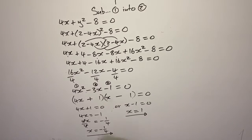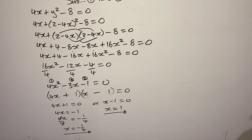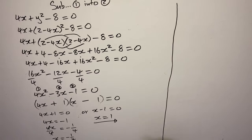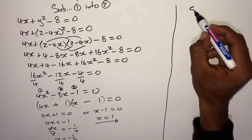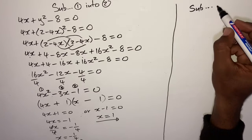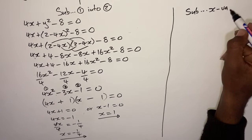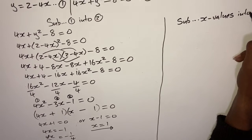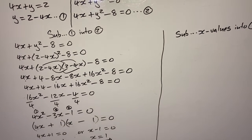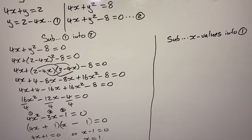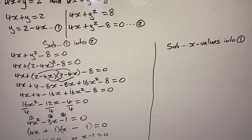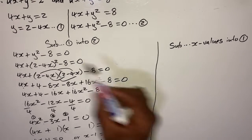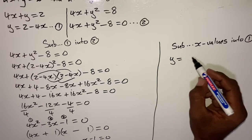I conclude: when x was negative 1 over 4, my y was 3. Then I go on to substitute the second x value, which is x = 1, into equation 1. So y = 2 minus 4(1). y = 2 minus 4, therefore y = negative 2.